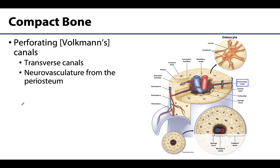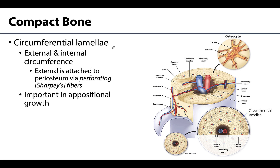Neurovasculature needs to travel from the outside of the bone through to the inner portions — to run through the central canals of osteons or to reach the larger medullary cavity. It does so through transverse or perforating canals, often referred to as Volkmann's canals.